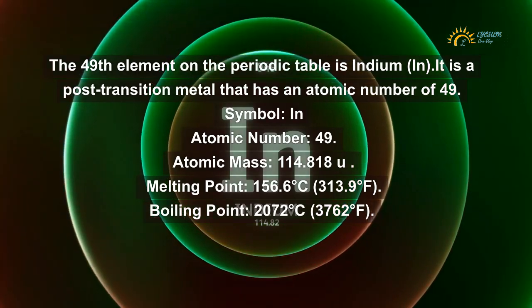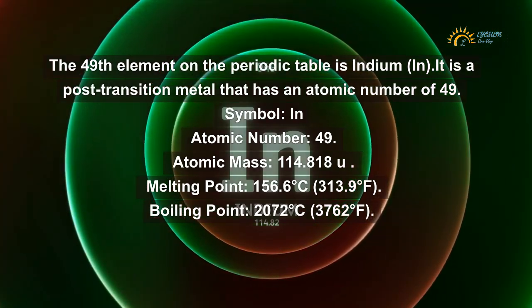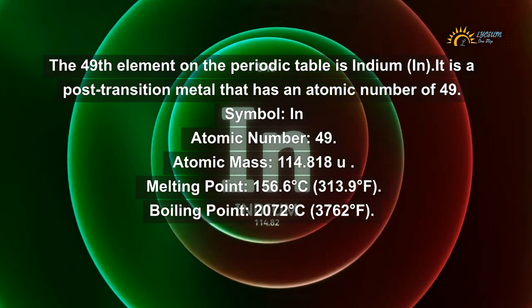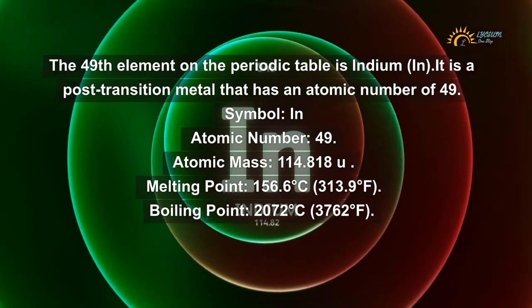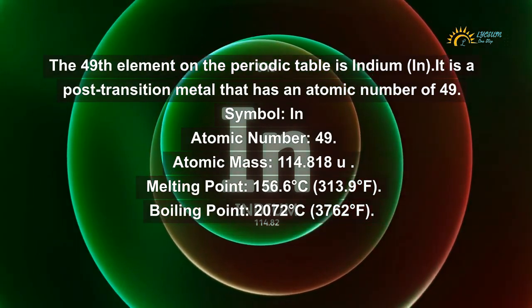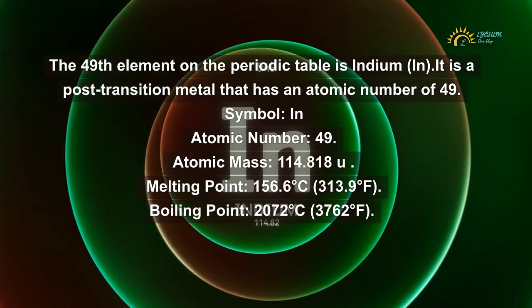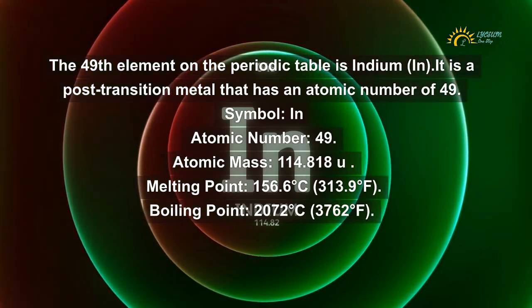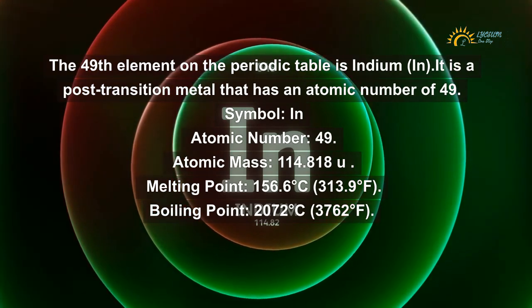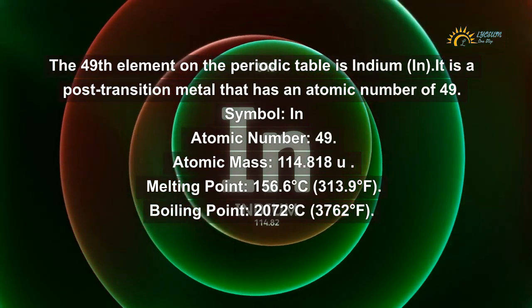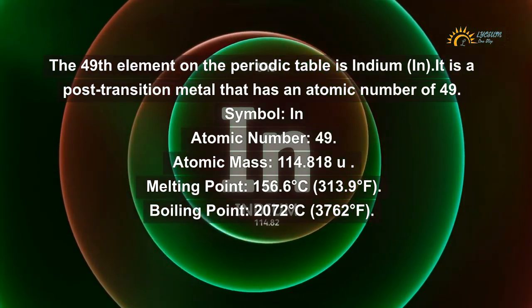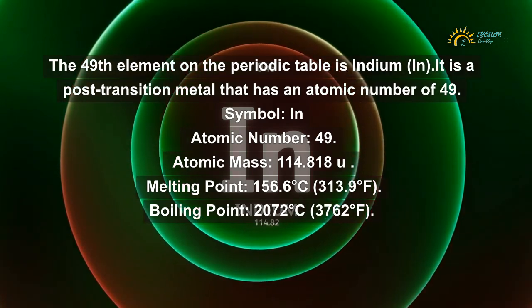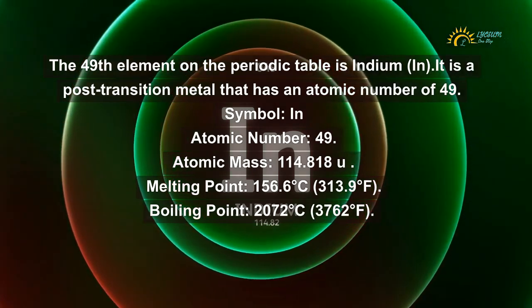Symbol: IN. Atomic number: 49. Atomic mass: 114.818 U. Melting point: 156.6 degrees Celsius, 313.9 degrees Fahrenheit. Boiling point: 2,072 degrees Celsius, 3,762 degrees Fahrenheit.